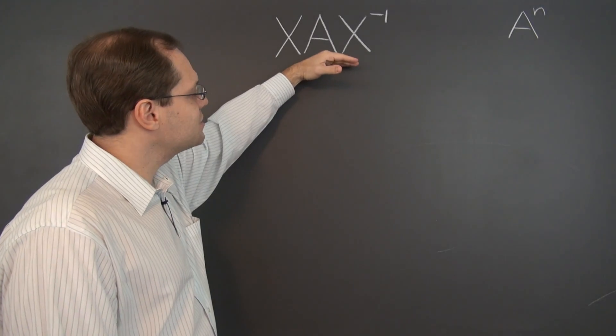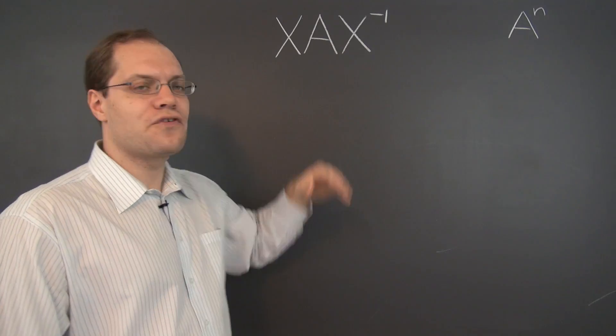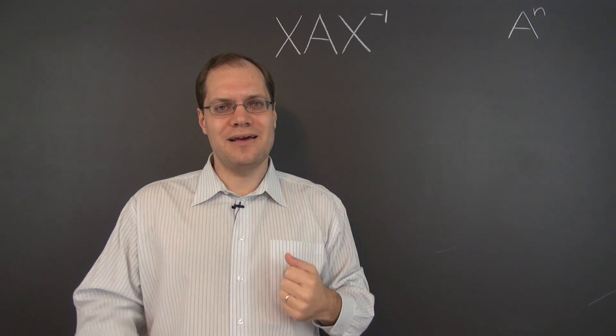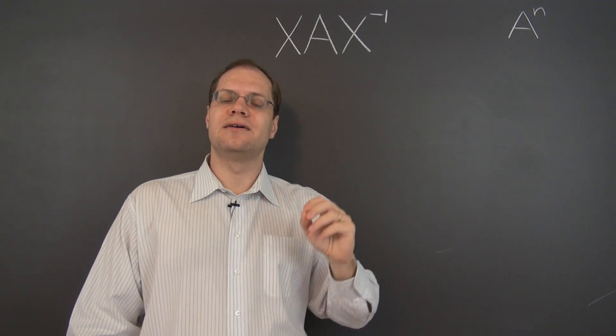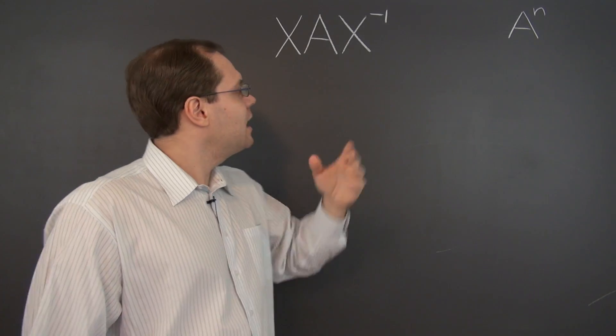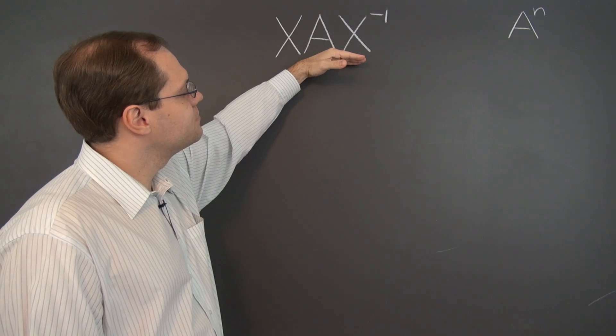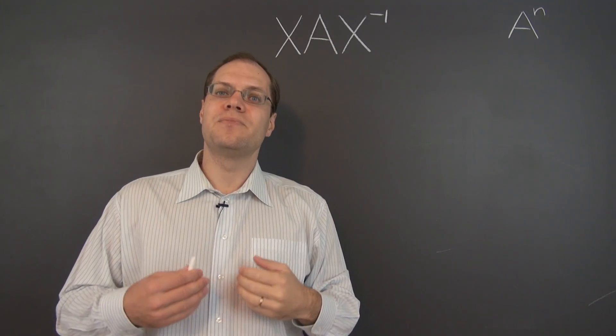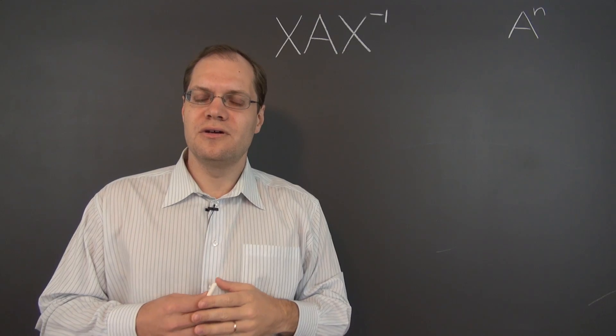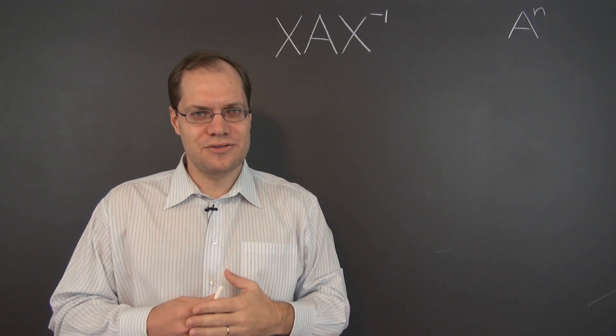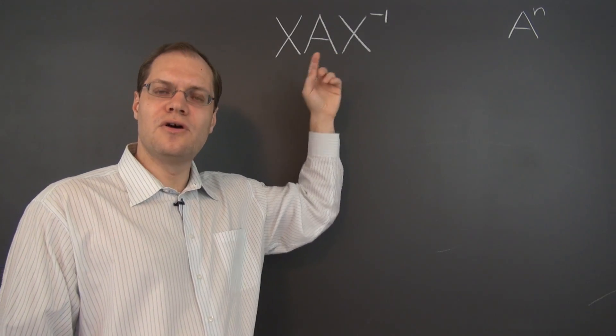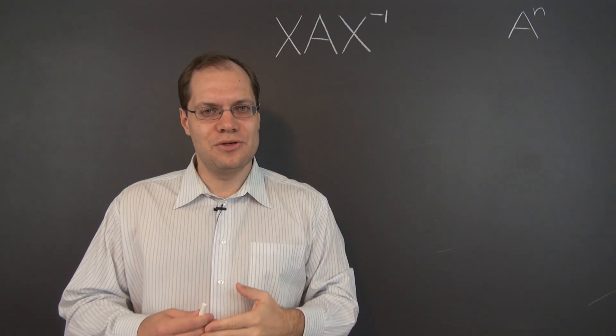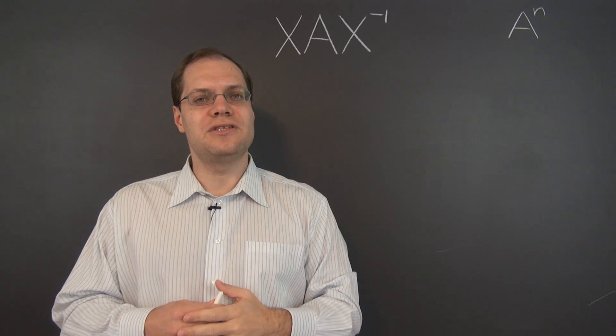Now if you saw an expression like this early on, your first instinct might be the same as mine, which is X times X inverse is identity, so X cancels X inverse, and this matrix equals A. But that of course is not correct. In order to reach that conclusion, we would need matrices to commute so that X can end up next to X inverse. But of course matrices do not commute, so we're not able to reach that conclusion.